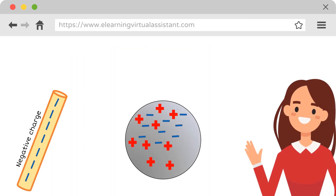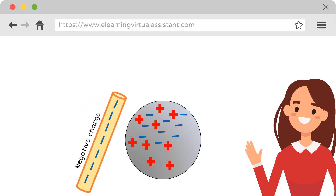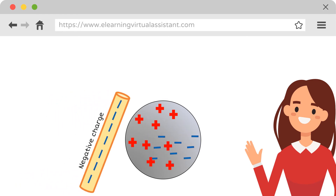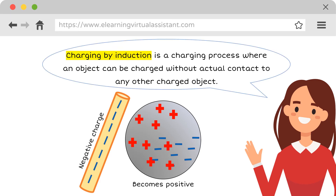The second one is charging by induction. It is a charging process where an object can be charged without actual contact to any other charged object. No electrons are transferred because the objects are not in contact. Negative charge induces positive charge; conversely, positive charge induces negative charge.